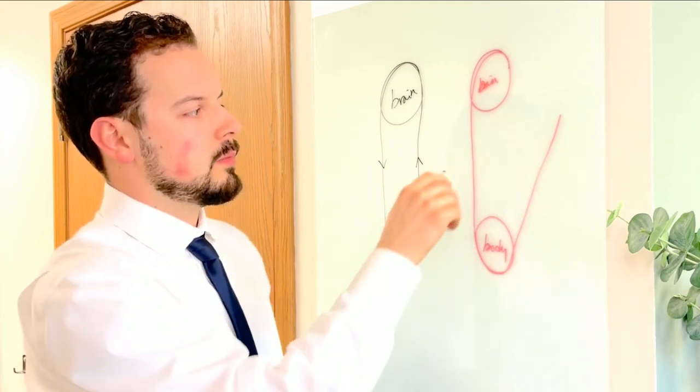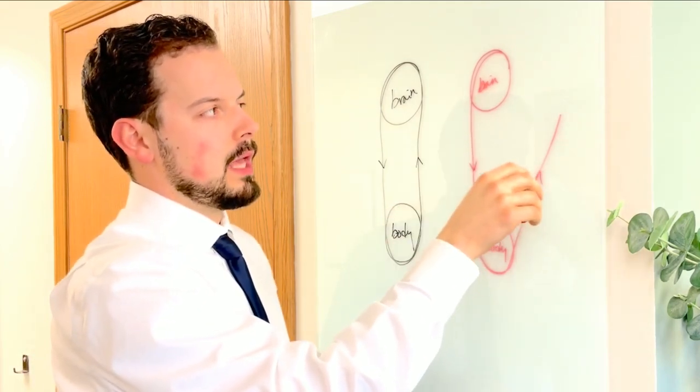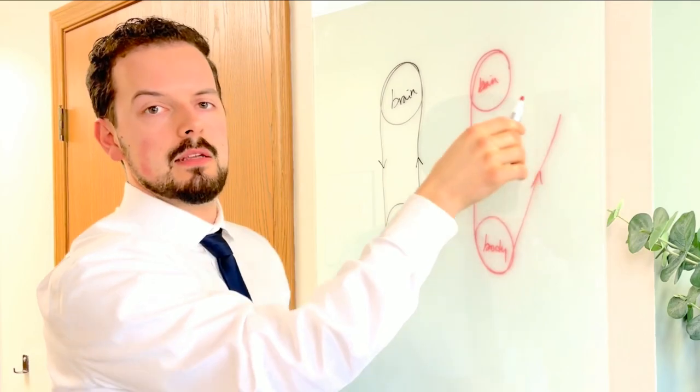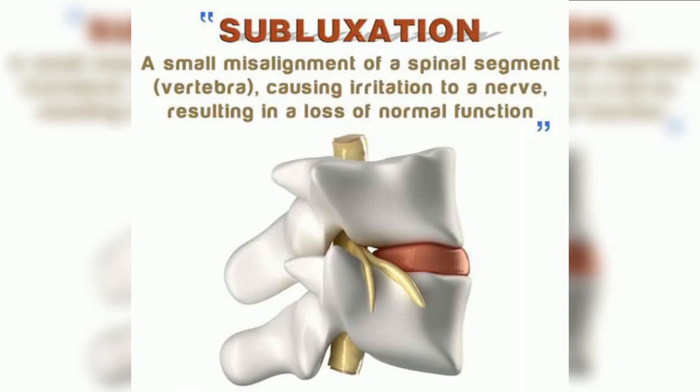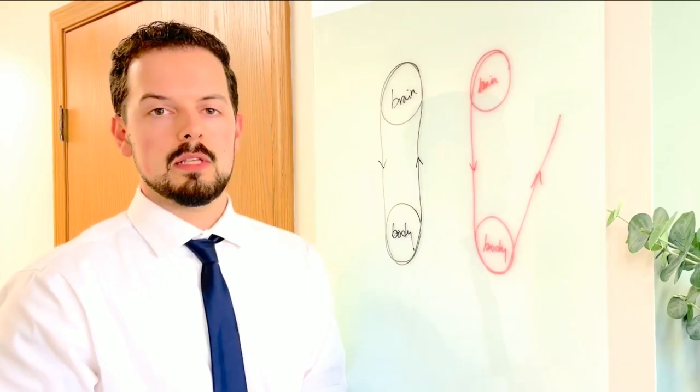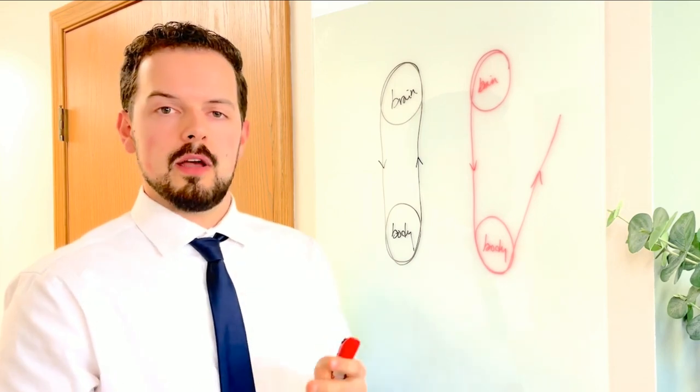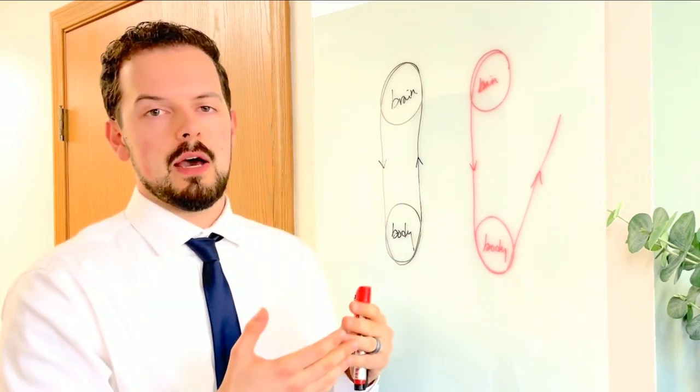When we see this happens, we have communication from the brain going down and the body can't communicate with the brain going back up. The disconnect, when we have that, we call that a subluxation in chiropractic. That's when we have a misalignment of a bone in the spine that puts pressure on the nerve and doesn't allow communication between the brain and the body.